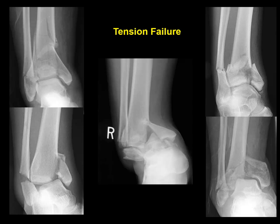One way to think about these injuries is to look at the fibula. Is the fibula intact? Is there a tension failure? Is there a compression failure? Here are several cases where you can see a tension failure of the fibula — a transverse, short oblique injury of the fibula — and a shearing injury of the tibial plafond, sort of a big vertical-type fracture on this side.